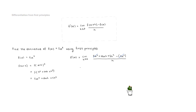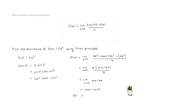Those two terms share a common factor of h, so we pull it out: limit as h tends to zero of h times (10x plus 5h), divided by h. The h in the numerator cancels with the h in the denominator, leaving the limit as h tends to zero of 10x plus 5h. Now direct substitution gives 10x plus 5 times 0, so f prime of x equals 10x.